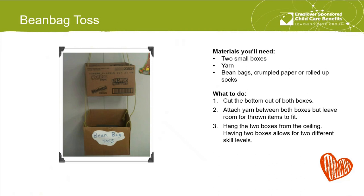The bean bag toss: materials you'll need are two small boxes, yarn, and then bean bags or crumpled up paper or rolled up socks. Cut the bottom out of both boxes, then attach yarn to hold them together with a little space in between, and hang that from the ceiling or a door frame. The two different boxes give some variety to the skill level — if they can't make it into the top one, they can make it into the bottom one.